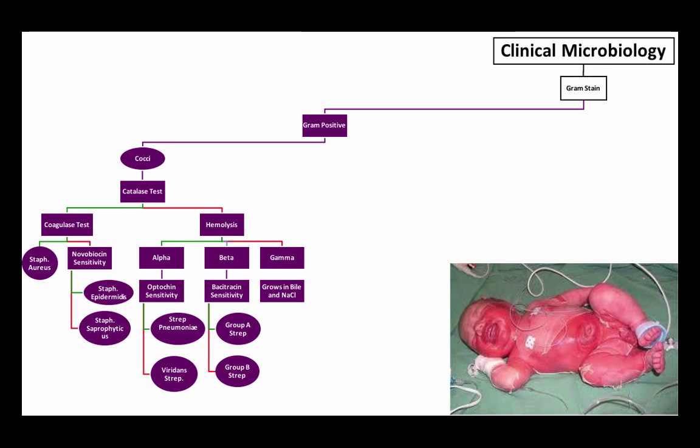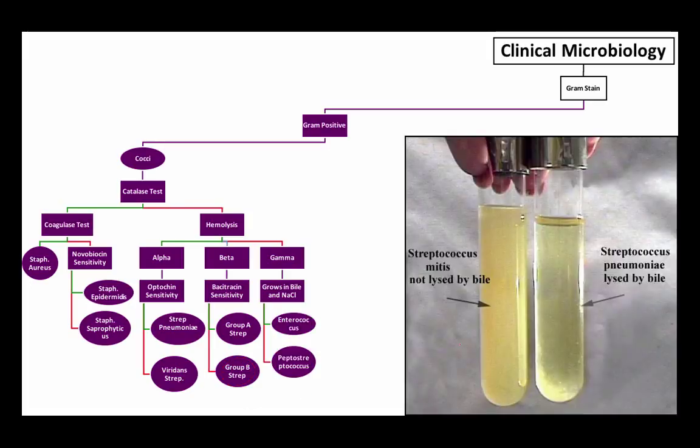Moving on to the group B streptococci, to review, the beta hemolytic bacitracin resistant streptococcal bacteria. The best example of these is strep agalactiae. It is a group B streptococcus. Think B for babies, group B for babies, because these bacteria are most commonly associated with bacterial meningitis of newborns. That's really the only thing you need to know about strep agalactiae or the group B streptococci.